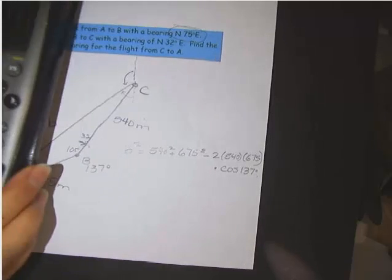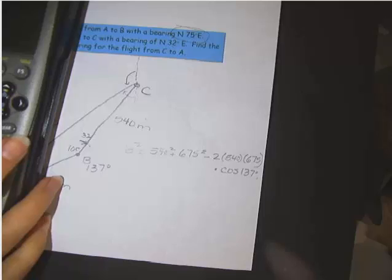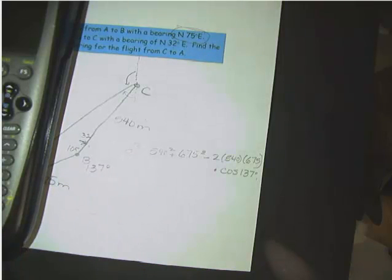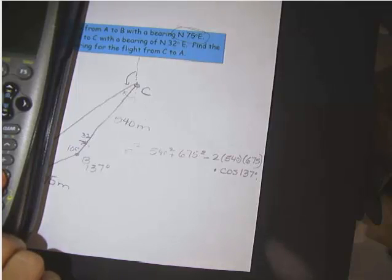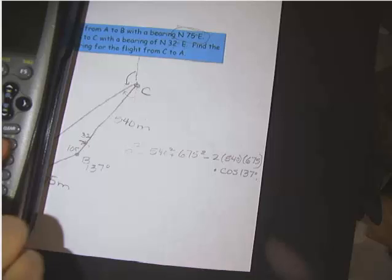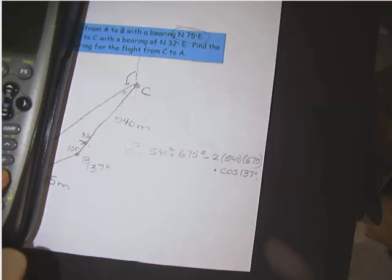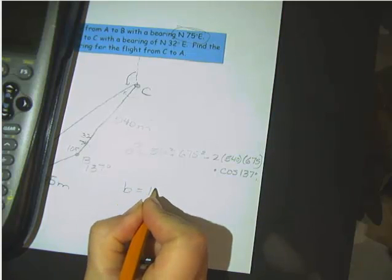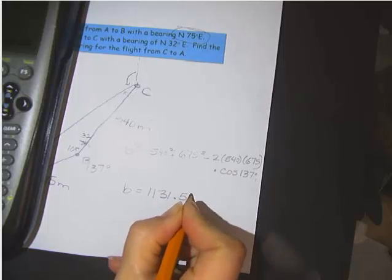So I'm going to do this one on my calculator together. Now, sometimes it's easier to do it all in one step. So we're going to square root, square root of 540 squared plus 675 squared minus 2 times 540 times 675 times the cosine of 137. And with parenthesis, so it's all being square rooted. And if I put that in correctly, b would equal 1131.54 miles.